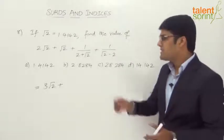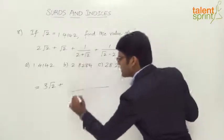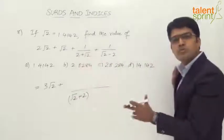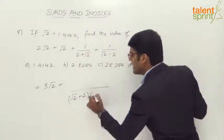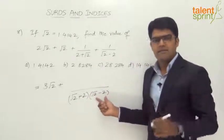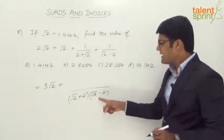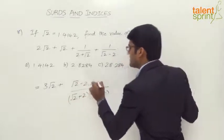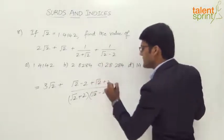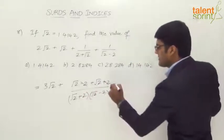Let's take the LCM of the two fractions. The common denominator is (√2 + 2)(√2 − 2). In the numerator, the first term gets multiplied by (√2 − 2) and the second term gets multiplied by (√2 + 2). So the numerator becomes: 1·(√2 − 2) + 1·(√2 + 2).